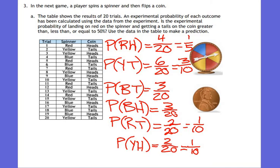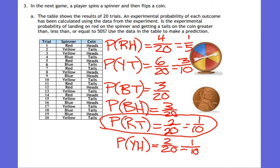Anything else that could have happened? Nothing else — we got it. They want us to answer the question now. They want us to look at landing on a red then a tail. We calculated red tails as 1/10. Is 1/10 greater than, less than, or equal to 50%? Less than. So we're going to say this is less than 50%.